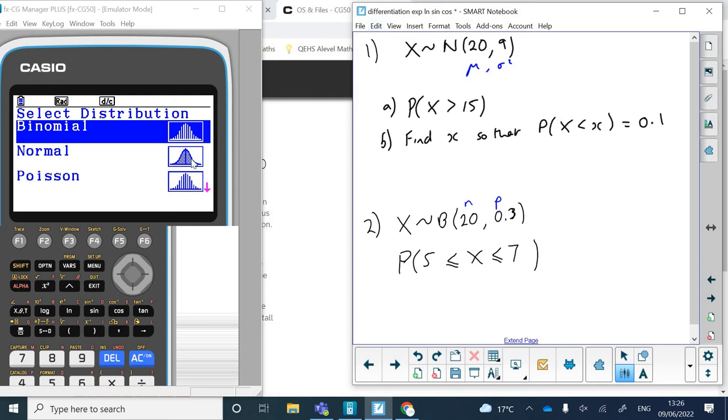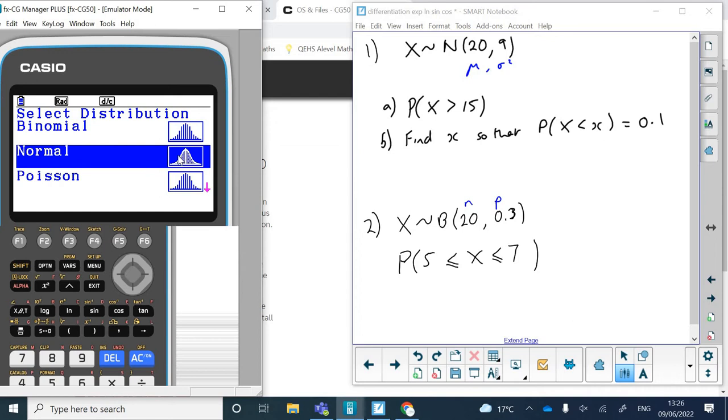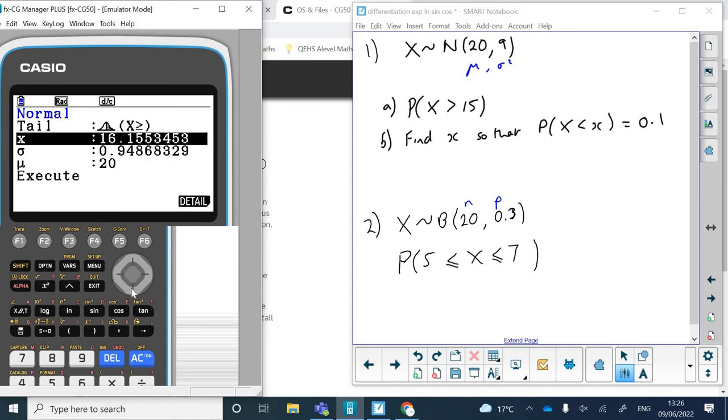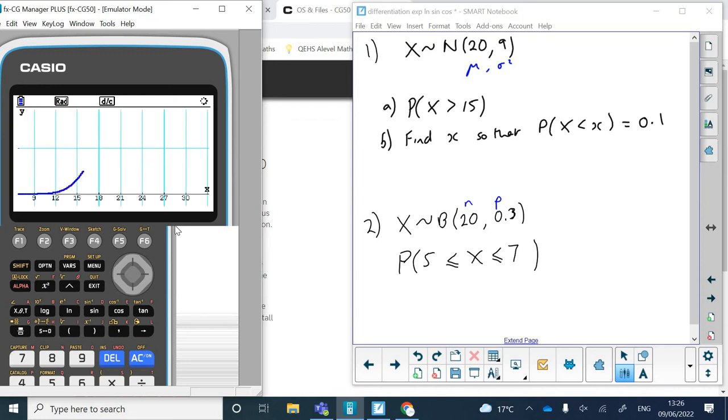It's just going to be finding some probabilities. So suppose we have a normal distribution. So I'm going to go down on the calculator to normal distribution, press execute. And I want to find the probability that X is greater than 15 when I've got a mean of 20 and a variance of 9. So I'm going to choose from the bottom the greater than option. And my X is 15. And remember, this is sigma, which is the standard deviation, not the variance. So I have to square root the 9. That gives me 3. And my mean is 20. And now if I execute...